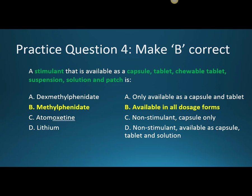Practice question four, make B correct. A stimulant available as a capsule, tablet, chewable tablet, suspension, solution, and patch is B, methylphenidate. Methylphenidate is available in all of these dosage forms and also as short-, intermediate-, and long-acting durations, which is helpful especially for children who aren't able to swallow tablets or capsules. Dexmethylphenidate is incorrect — it's only available as a capsule and tablet, and only as short- and intermediate-acting. Atomoxetine is not a stimulant and is only available as a capsule. Lithium is not a stimulant but is available as a capsule, tablet, and solution.